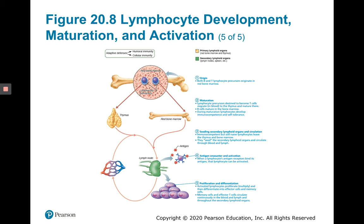When T and B lymphocytes encounter their one specific antigen, they are activated by differentiating into their effector cell. Once differentiated, they begin cloning themselves. They may differentiate slightly further to create memory cells. The activated lymphocytes that proliferate and differentiate into effector cells and memory cells are the ones that fight infection.